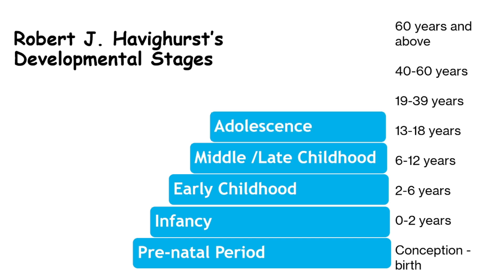Stage 5: Adolescence, 13 to 18 years. Adolescence involves rapid physical changes and a focus on identity formation. This period is marked by significant emotional and cognitive development. Picture a teenager experiencing a growth spurt and exploring new interests to figure out their identity. They might also face challenges such as mood swings and peer pressure.